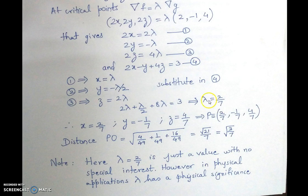That gives us the value of lambda as 2 by 7. Therefore, now we can determine explicitly the values of x, y and z as lambda, which is nothing but 2 by 7 for x, y as minus lambda by 2, that gives you minus 1 by 7, and z as 4 by 7.